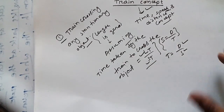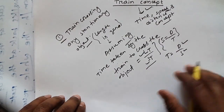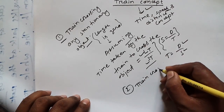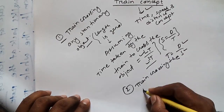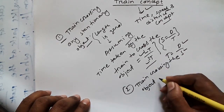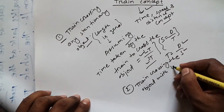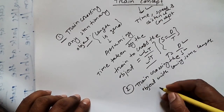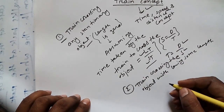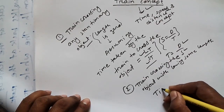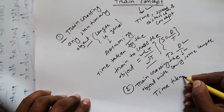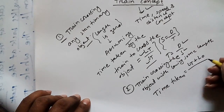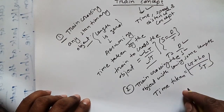This is the first concept of train. We have four concepts total. The second concept is train crossing a stationary object with having some length. Therefore, time taken is equal to length of the train plus length of the object, upon speed of the train.